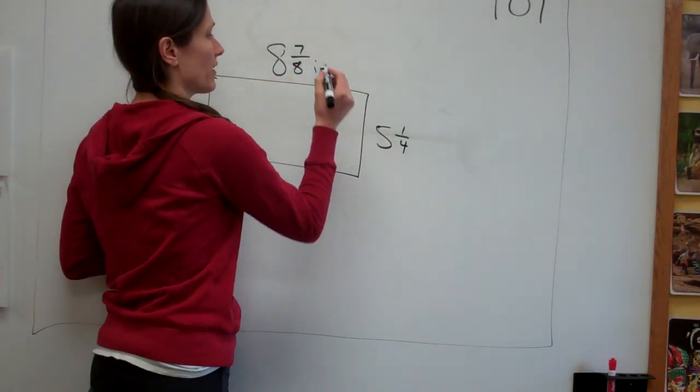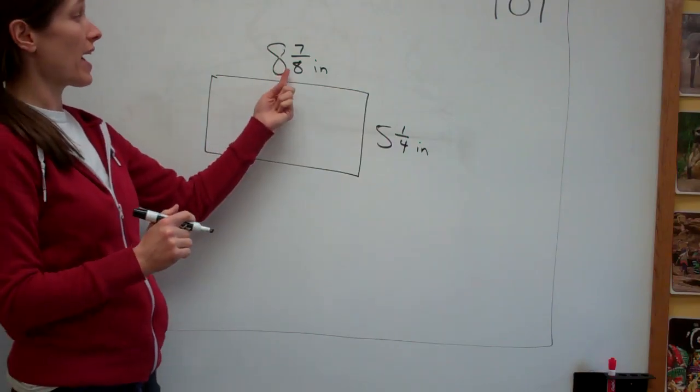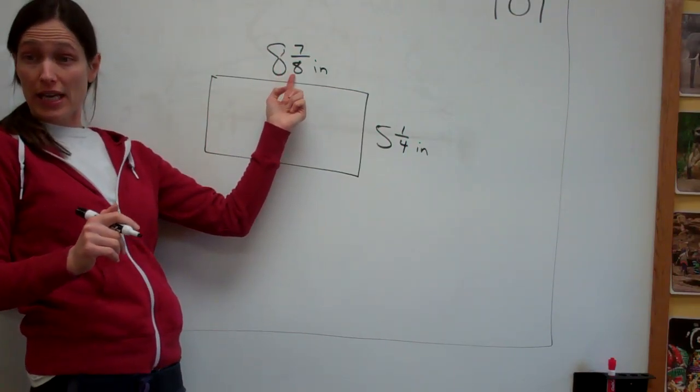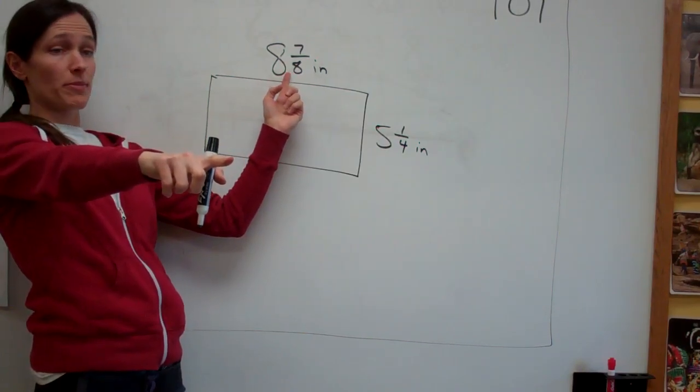Estimate the area of this rectangle by rounding the length and the width to the nearest inch before multiplying. So right now, it's eight and seven-eighths inch and five and one-fourth inch. Okay. The eight and seven-eighths, does everybody agree? Let's see what. What's it going to become? Oh, forty. No, no. What's this going to become?